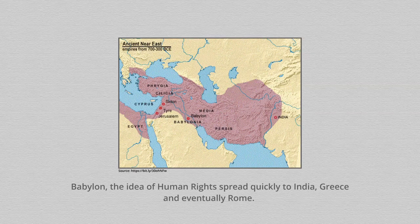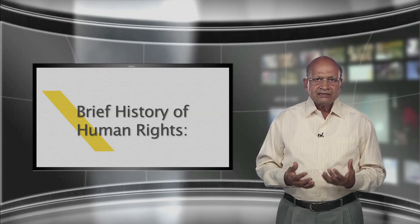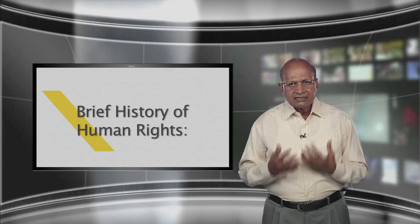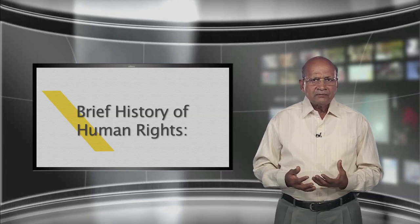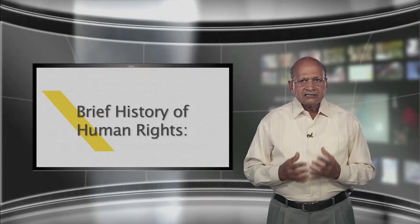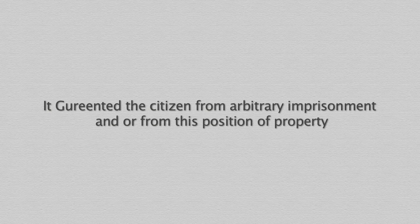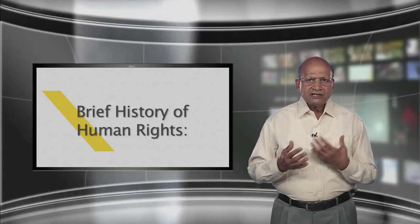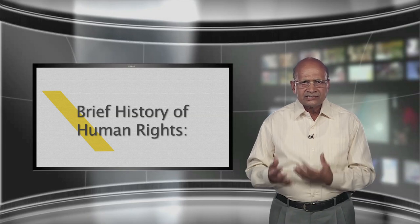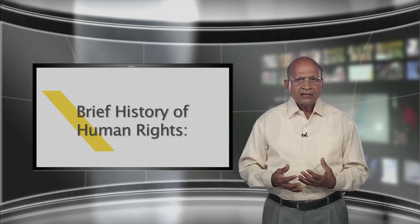It was declared that all people had the right to choose their own religion and establish racial equality. The idea of human rights spread quickly from Babylon to India, Greece and eventually Rome. There, the concept of natural law arose in observation of the fact that people tended to follow certain unwritten laws in the course of life, and Roman law was based on rational ideas derived from the nature of things. Magna Carta 1215 is considered as the foundation of liberty by Englishmen. In 1215, after King John of England violated a number of ancient laws and customs by which England had been governed, his subjects forced him to sign the Magna Carta.